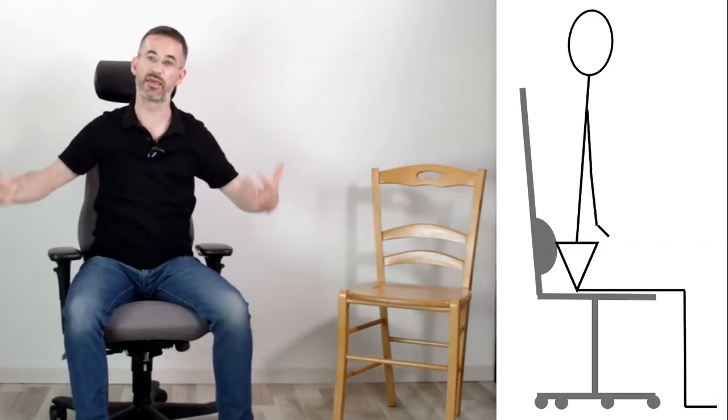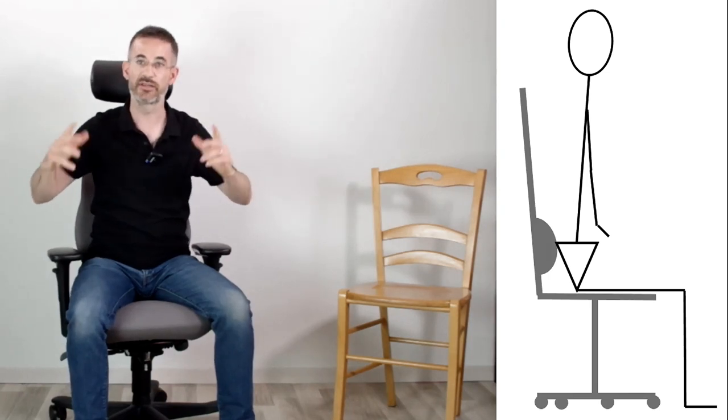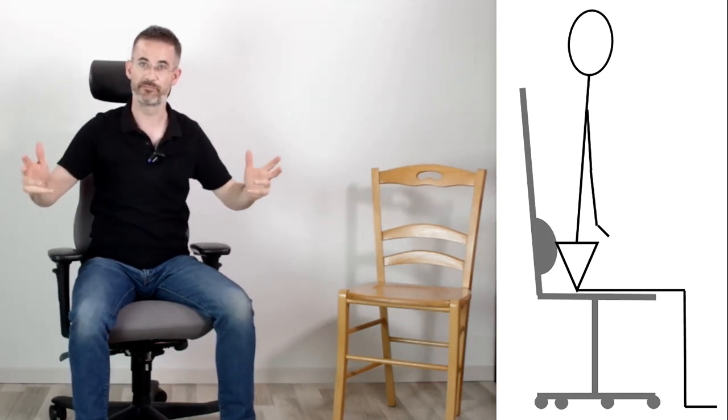What is a neutral sitting posture? It is when you sit on your sitting bones against the lumbar support. A good chair is a chair that allows you to do this.